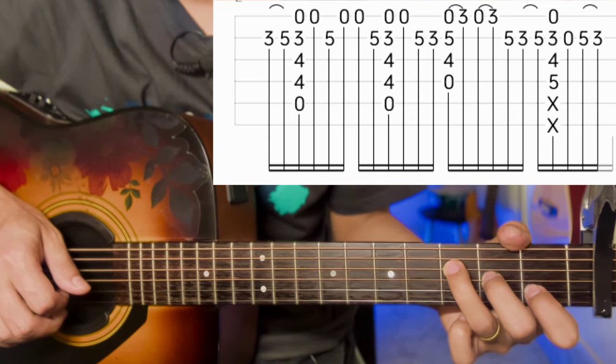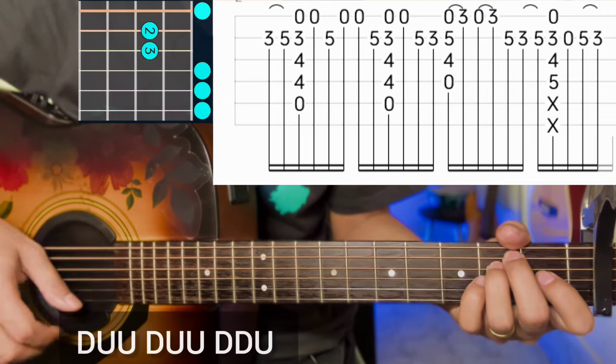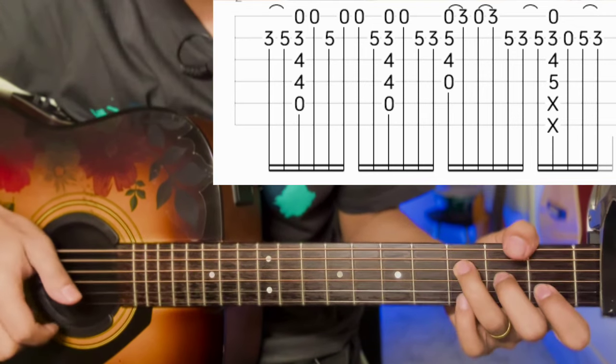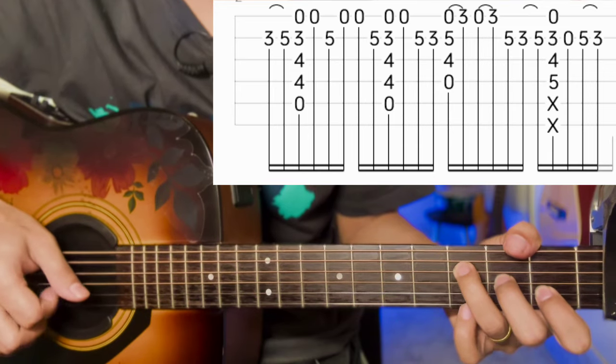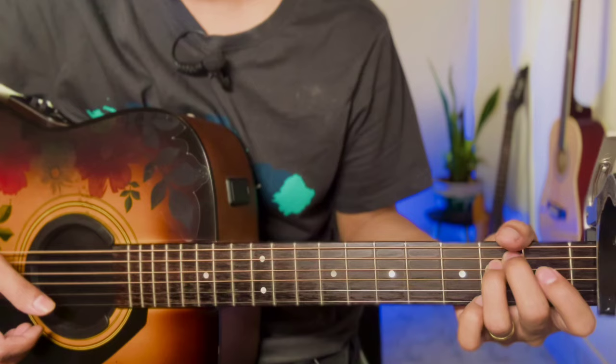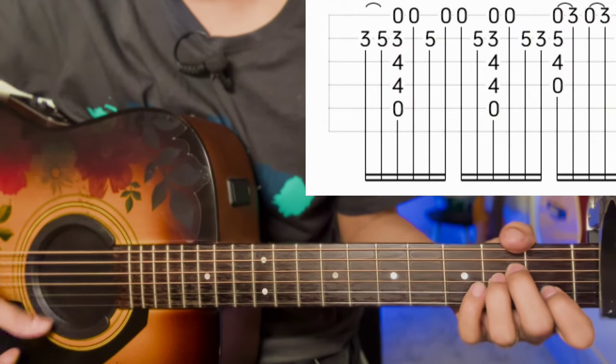E minor chord strumming: down-up-up-down-up-up-down. Repeat the same on F triad.